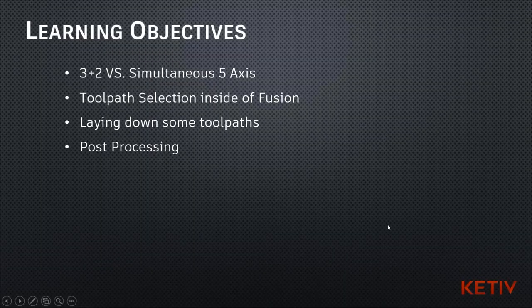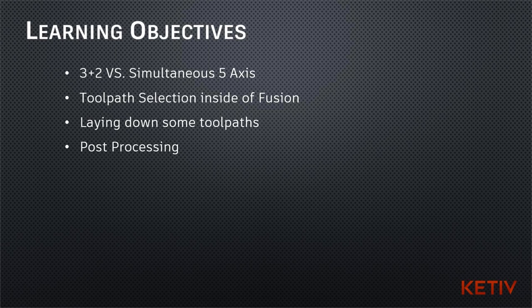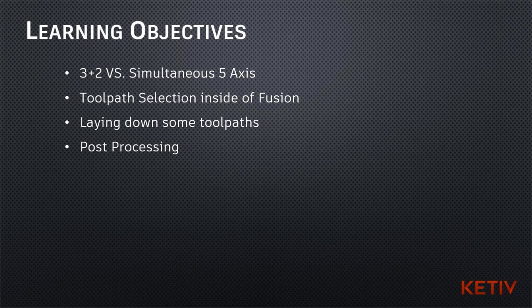We have some learning objectives for today. Like I mentioned, we are going to be talking about three-plus-two, which is normally referred to as positional — we'll talk about why it's called positional versus the simultaneous five-axis toolpath. We're going to cover some of the toolpath selections inside of Fusion 360, give you some guidance on when you would use a specific toolpath, then jump inside Fusion 360, program a part or two, show the workflow for programming a five-axis part, and finally post that part out and dive a little bit into the post processor.